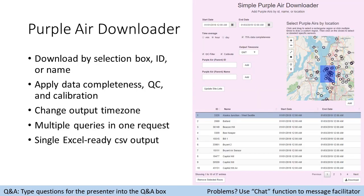This is the PurpleAir downloader. You can select sites to download using the map on the left with a rectangle or polygon selection, or you can search by ID or name. You select the date range and then you can average the data from minute to hour to day, apply a 75% data completeness filter, check boxes for QC filtering or calibration, and change the output time zone. You can also have different start and end dates for different sets of monitors. The output is a single Excel-ready CSV that you can open in Excel and start making graphs or analyze in your favorite analysis program.